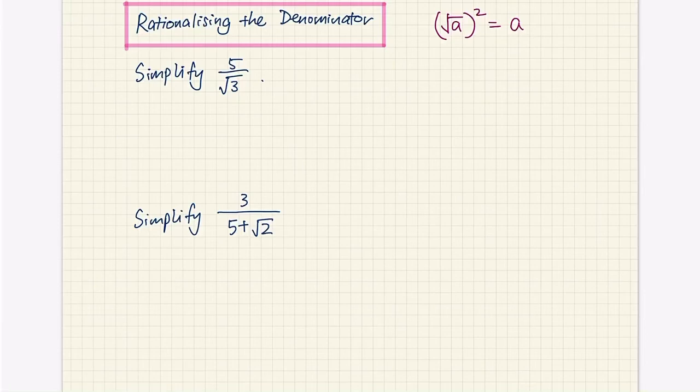Hi everyone, today I'll be talking about rationalizing the denominator of a fraction which contains one or more surds. In the previous video I talked about some basic properties of surds as well as how to simplify surds. Now in today's video I'll be talking about fractions whereby the denominator has one or more surds.